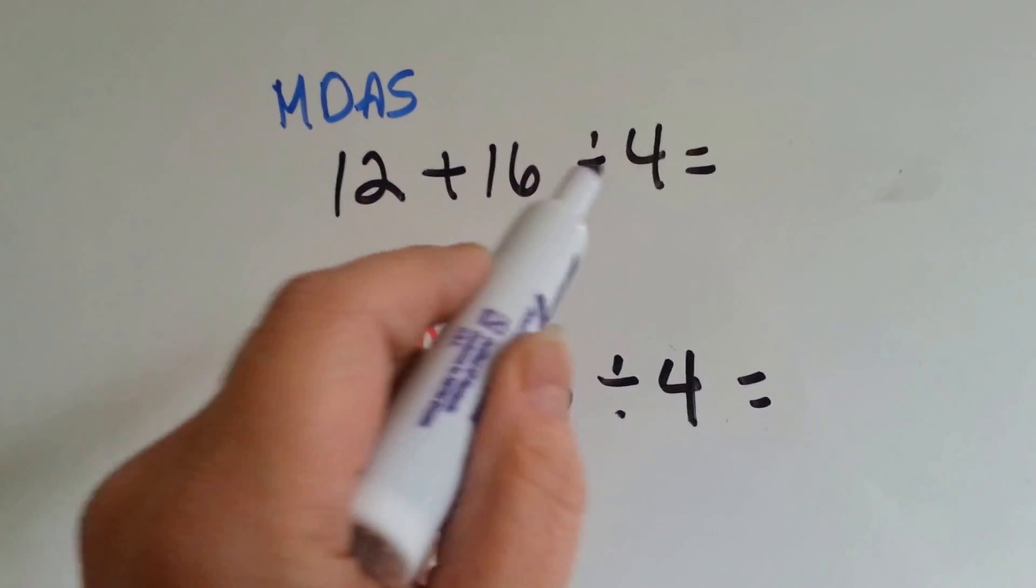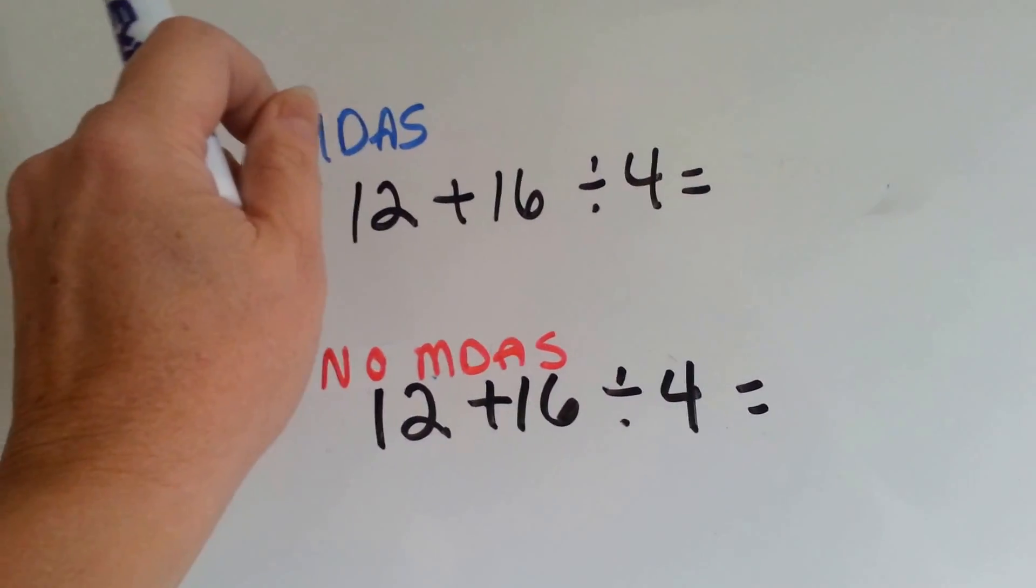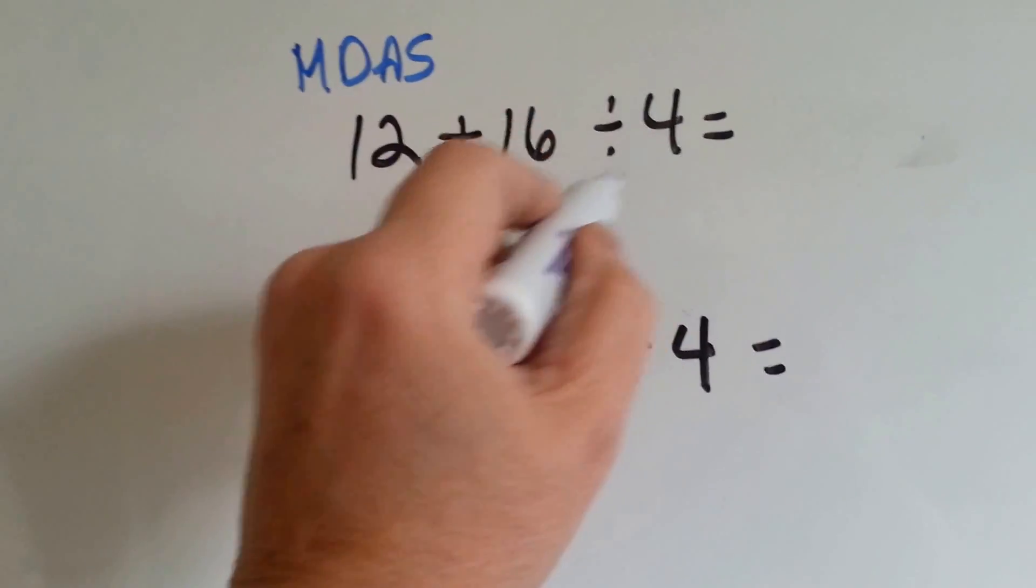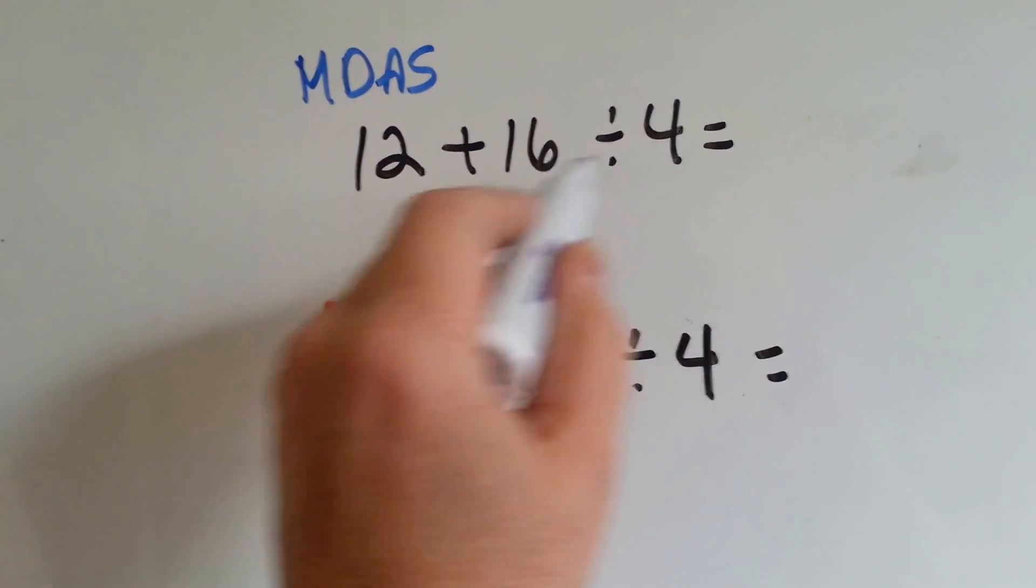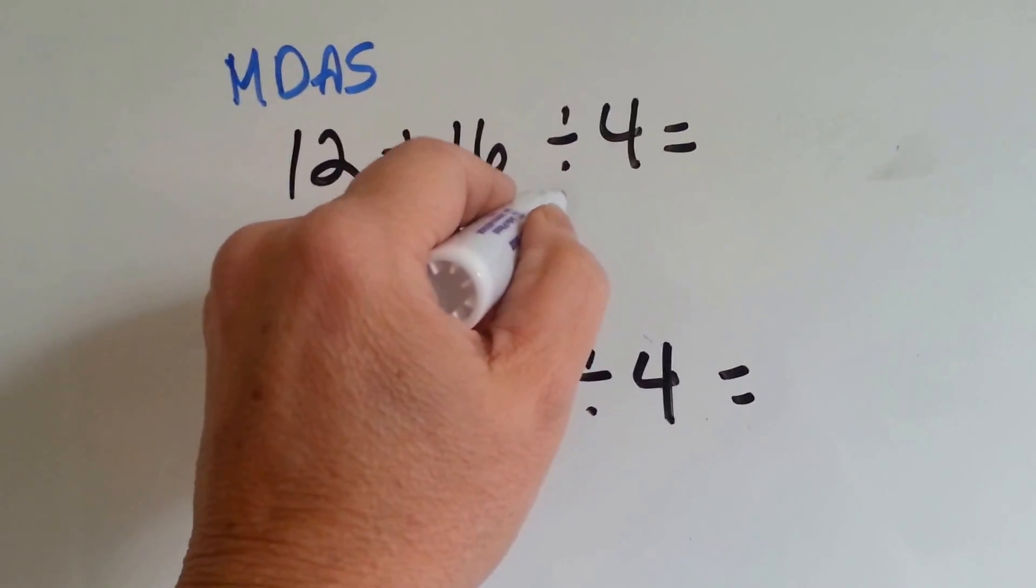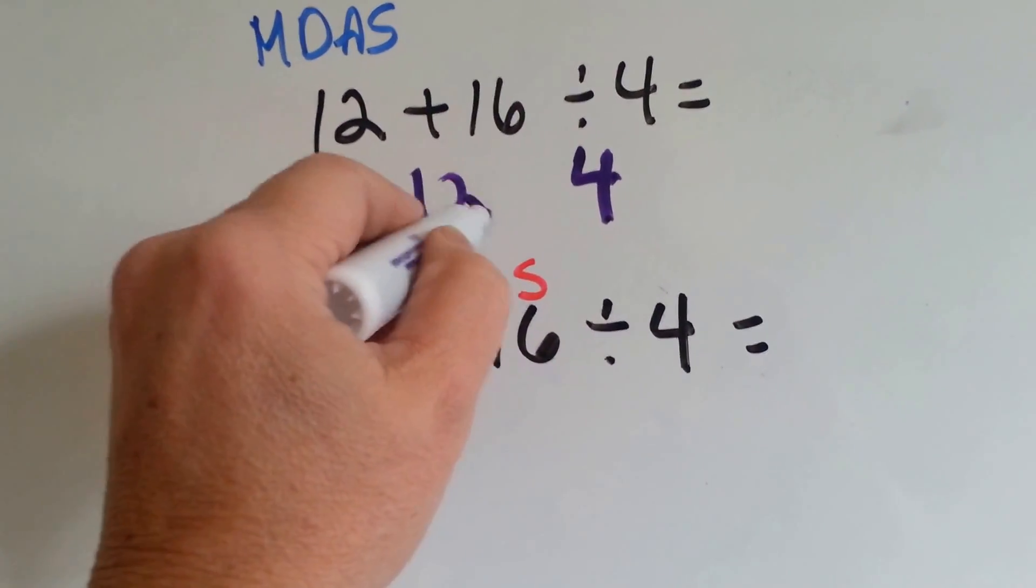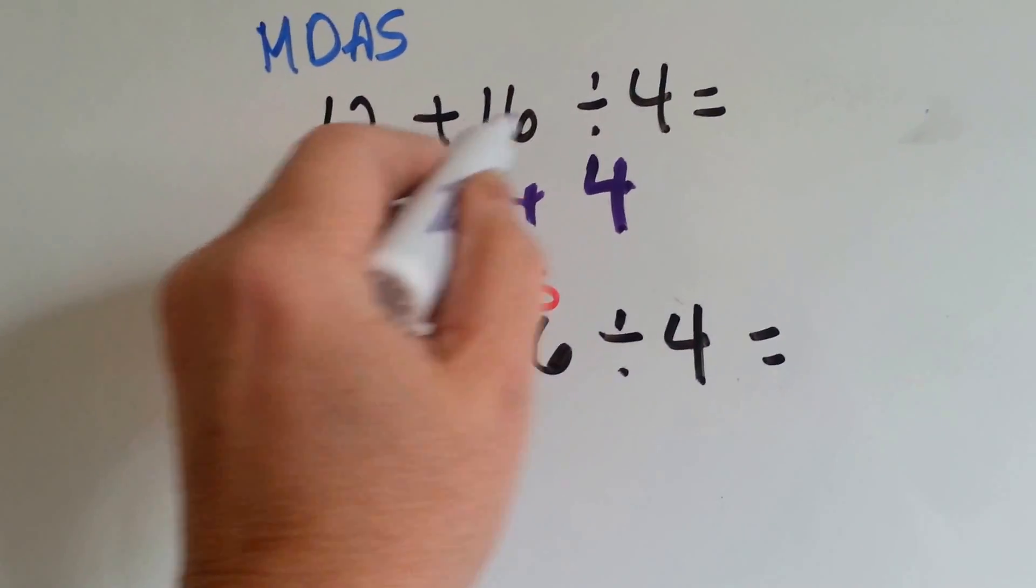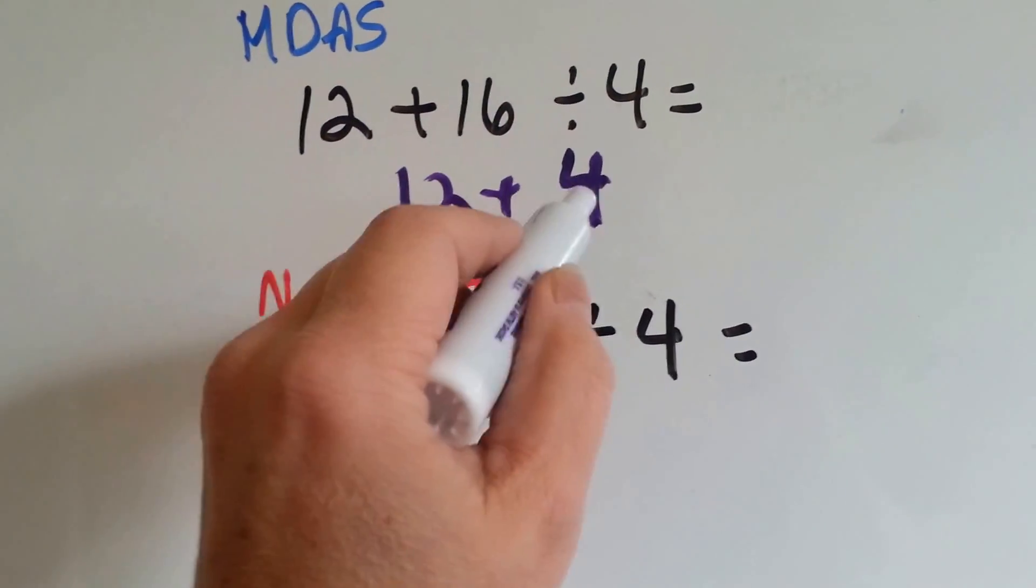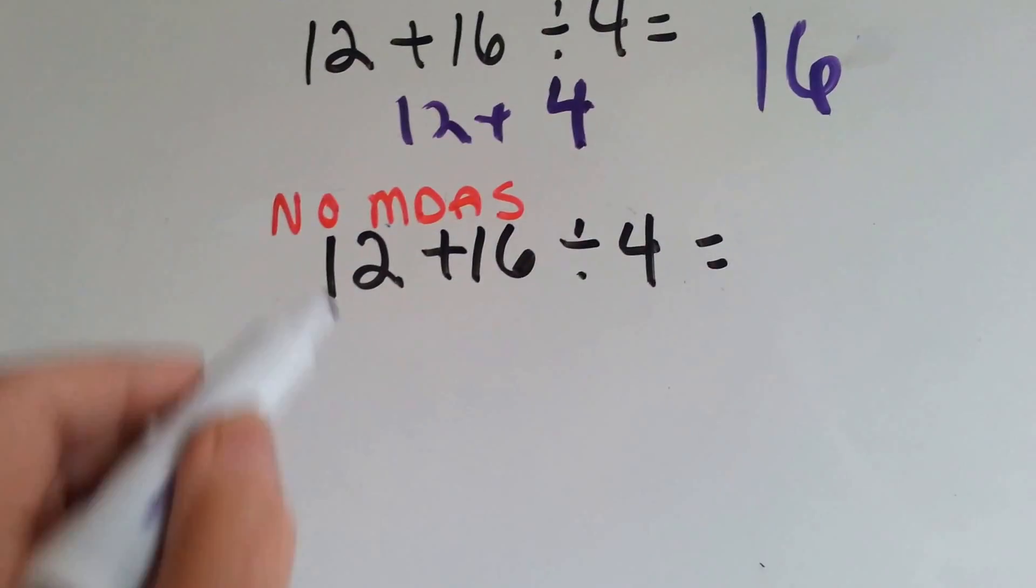12 plus 16 divided by 4. Well, there's no multiplication, so we don't have to do the M, but there's a D for division. So, 16 divided by 4, how many 4s go into 16? 4 times 4 is 16, so that would be a 4. Now, we're going to add the 12. See? We did this part first. Now, we're going to do the adding. 12 plus 4 equals 16.